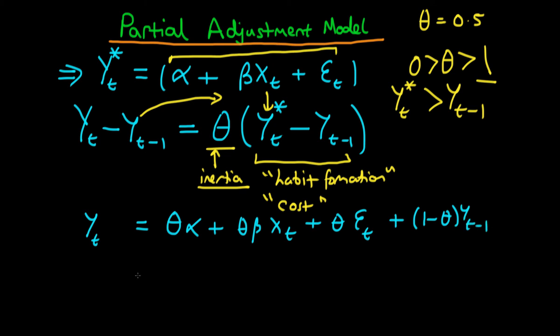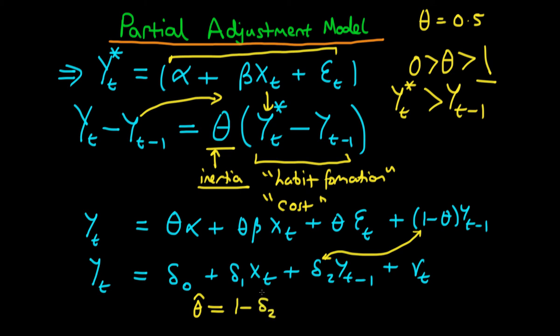So how do you actually estimate this? The idea is that you would run a regression where yt equals delta naught plus delta one times xt plus delta two times yt-1 plus vt. Note that to get an estimate of theta, all we need to do is compare this delta two with (1-theta). Our estimator for theta, the rate of adjustment, equals one minus our OLS estimate of delta two.